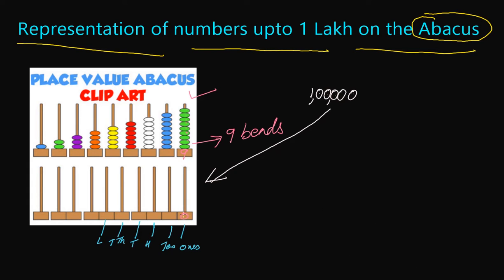We are not putting any beads on the ones place — it is zero. On the tens place we also have zero. On the hundreds place we have zero, so we don't put anything there. On the thousands place we have zero, on the ten thousands place we have zero. On the lakhs place we have one, so we have to put one bead there.